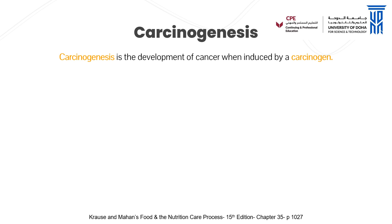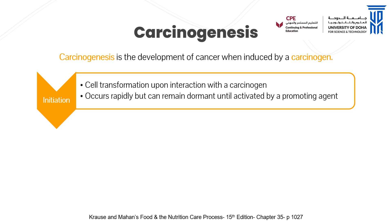Carcinogenesis is a biologic multi-stage process that proceeds in a predicted way as a continuum of three distinct phases: initiation, promotion, and progression. Initiation is the first stage — cell transformation upon interaction with a carcinogen at the DNA level. It usually occurs rapidly, but can remain dormant until activated by a promoting agent. After the initial cell damage has occurred, the transformation from a normal cell to a detectable cancer can take years or even decades.